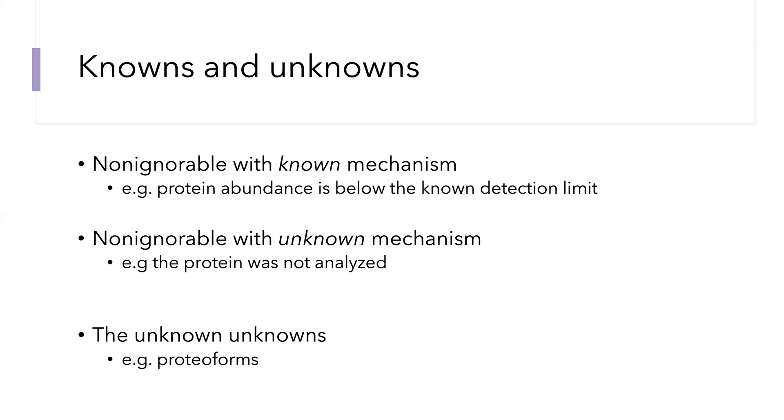There is one more distinction I'd like to make. So far, I've assumed that this missingness matrix M is observed and completely available to us, but that's not always the case. I like to think about the unknown unknowns as things that we didn't measure that we may not have known we didn't measure. One example of that might be proteoforms, post-translationally modified proteins that exist, but we may not know about. Those are rows of Y and M which aren't even included because we aren't aware of them. There are certain contexts in which it's also important to think about those unknown unknowns.